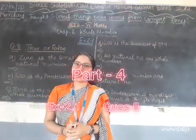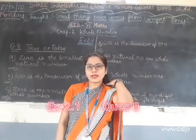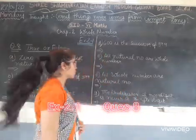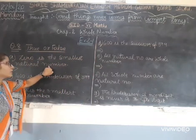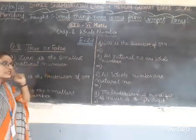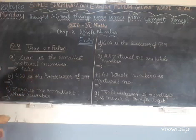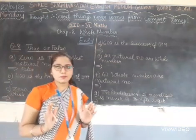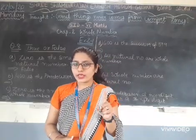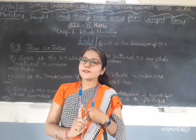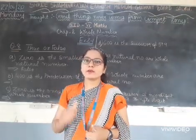We will start question number 8, which is true and false. First one: 0 is the smallest natural number. The statement is false. Why? Because 0 is the smallest whole number, not natural number. The smallest natural number is 1. Smallest natural number is 1 and the smallest whole number is 0. That's why the statement is false.